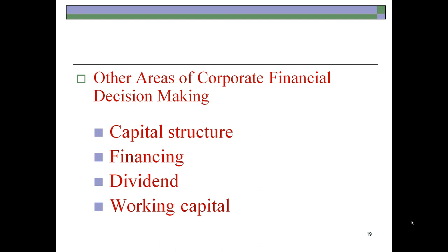In this next segment of introductory corporate finance, we deal with other areas of corporate financial decision making. Earlier, we discussed all five key areas of corporate finance, and they include investments, capital structure, financing, dividend, and working capital. We have already extensively discussed investment decisions, and so now we quickly summarize the last four.